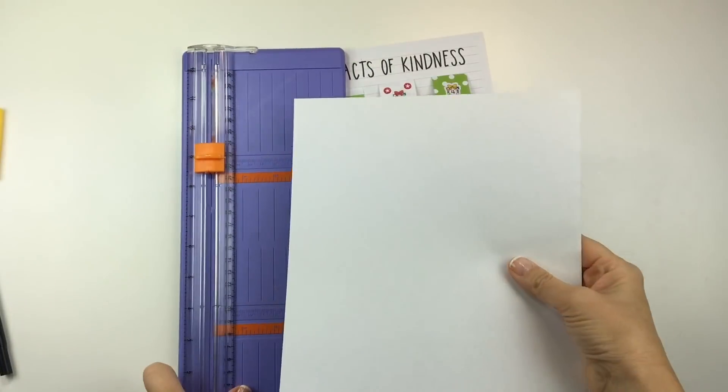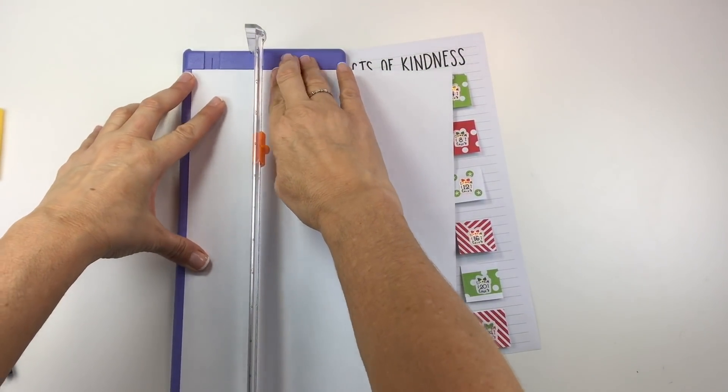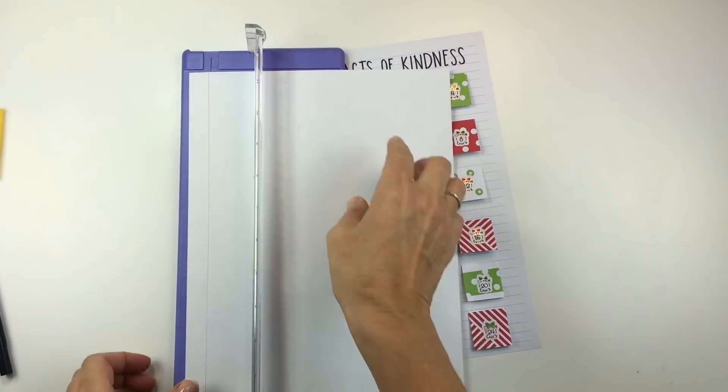I'm not crazy about the black edge on the paper so I'm going to cover it up and use that area to be a little more decorative.